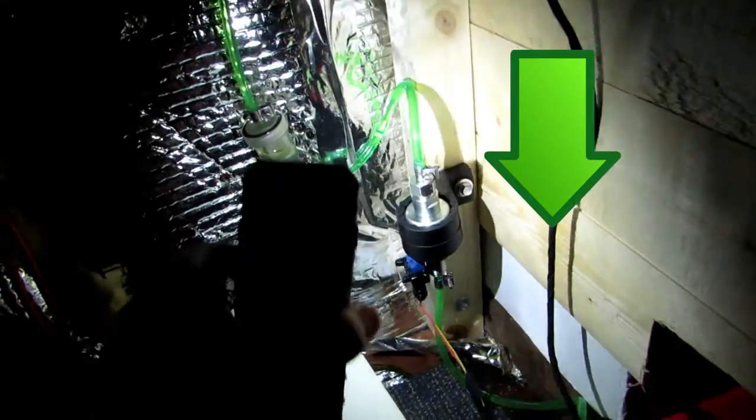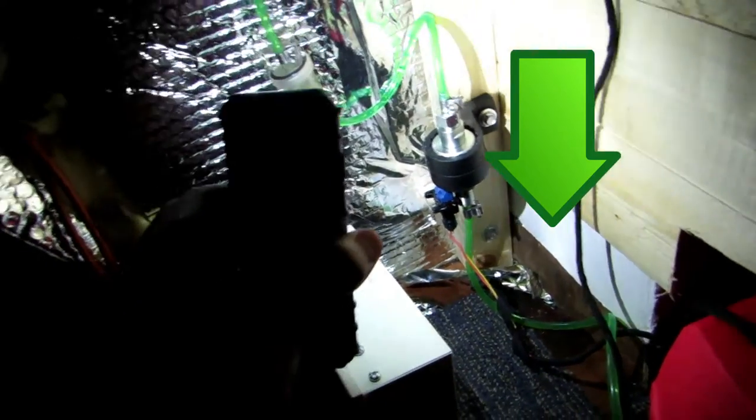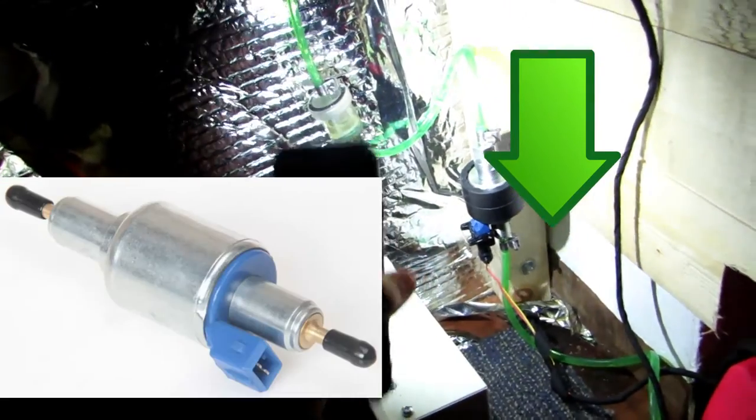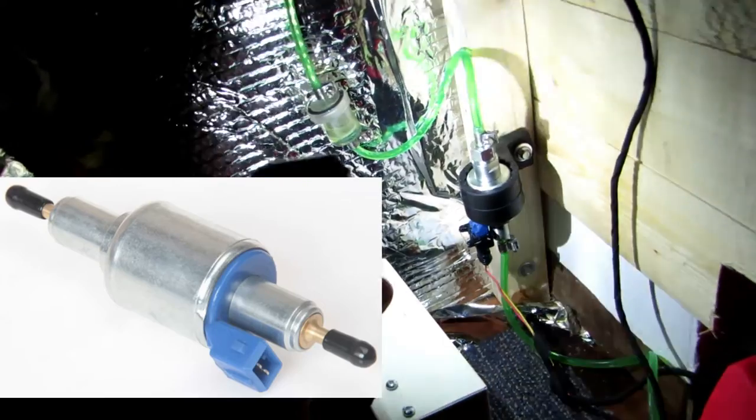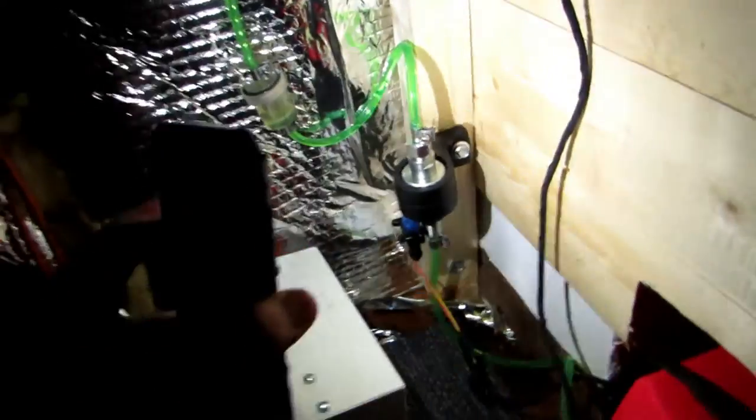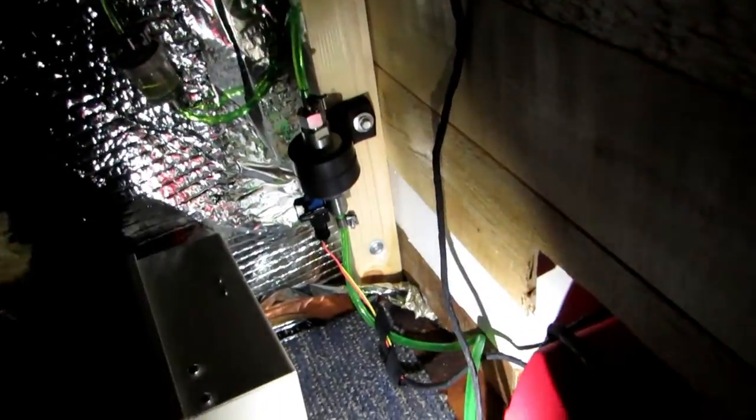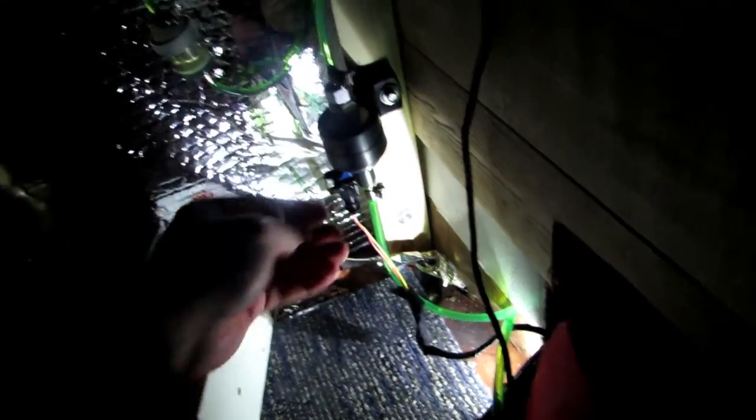Some pumps have an arrow pointing down. This one here has an arrow on the actual pump itself pointing down, so it's directed to the diesel heater. Let me see if I still got a leak here because I've changed the clips on mine. Just see if this is still leaking. No, it's not leaking, that's cool.